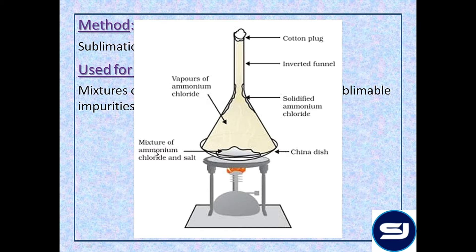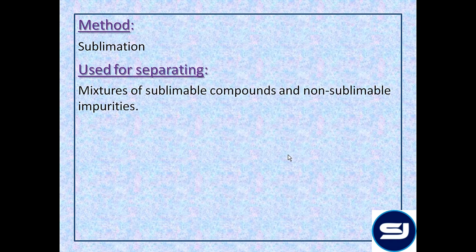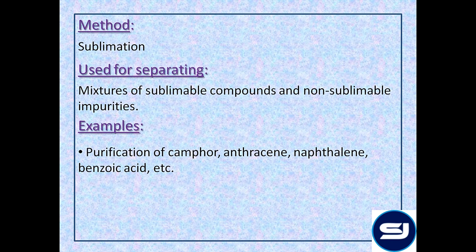The mixture of ammonium chloride and salt is heated in a china dish covered with an inverted funnel and a cotton plug at the top. When the mixture is heated, the solid ammonium chloride directly converts into vapors. These vapors accumulate on the surface of the inverted funnel, while the non-sublimable impurities remain in the china dish. For organic compounds, this method is used for purification of camphor, naphthalene, anthracene, benzoic acid, and other sublimable organic compounds.